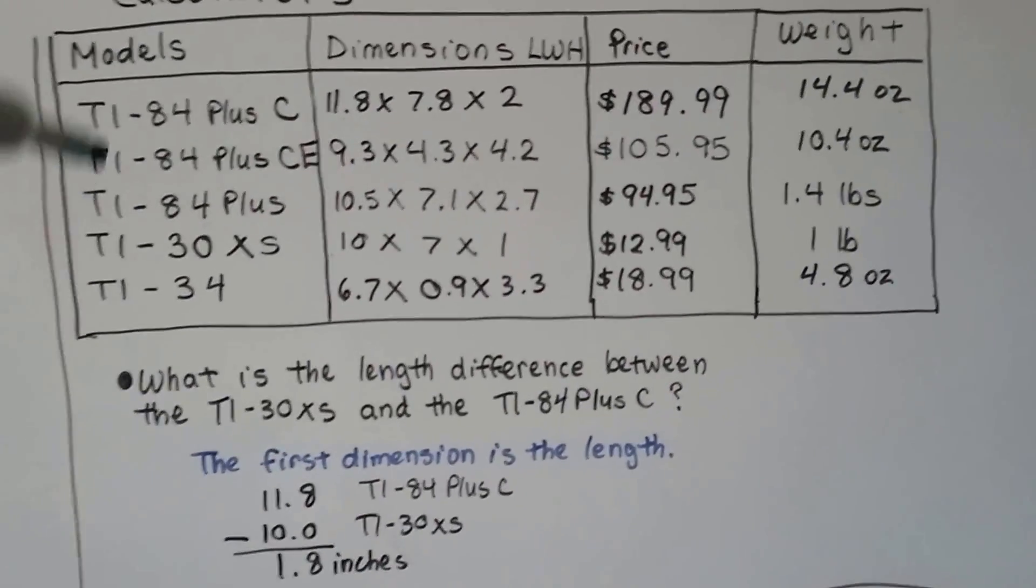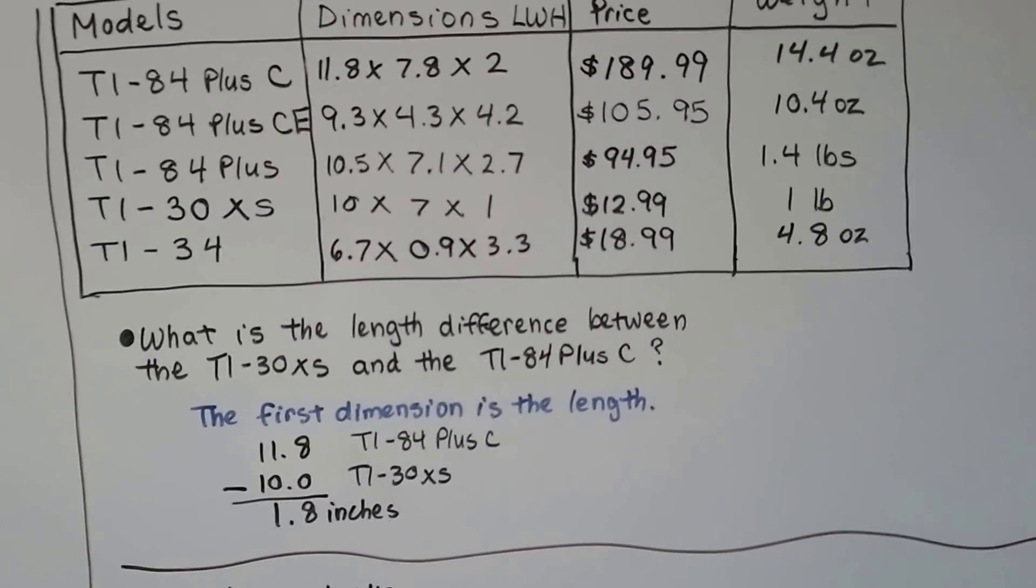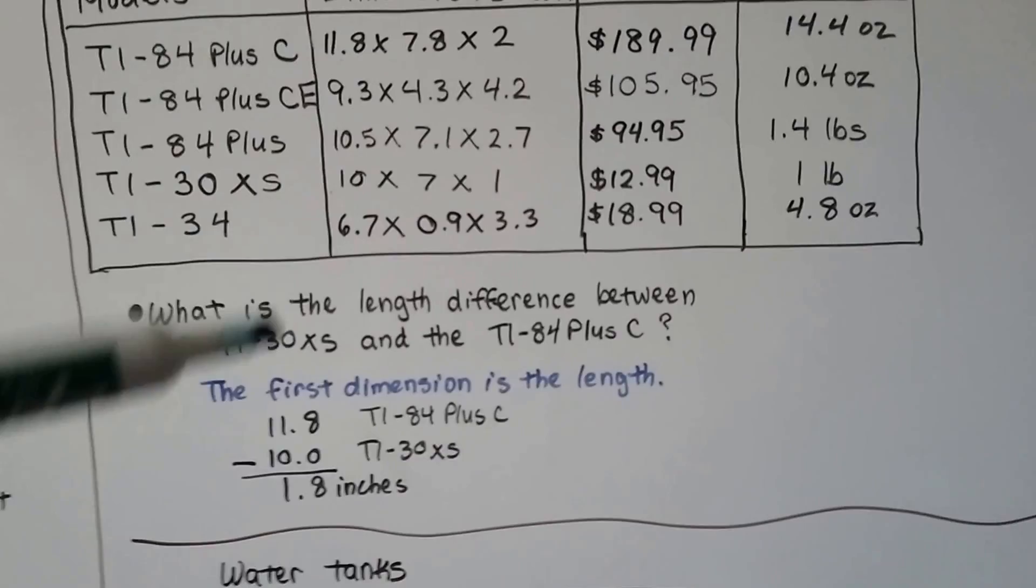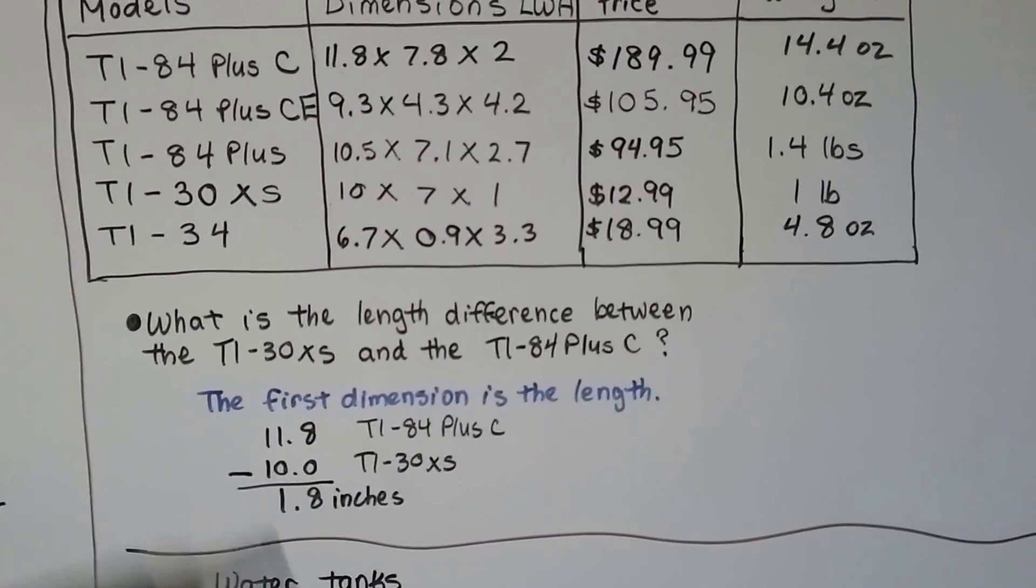Length, width, and height. So the length is going to be the first number. So this one is 11.8 and the TI-30XS is 10. So it's 1.8 inches difference between the two.